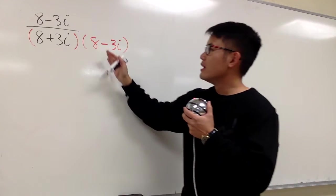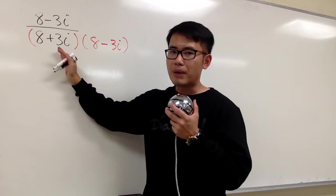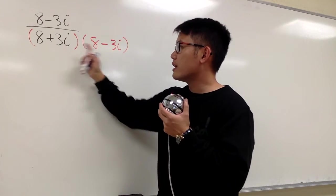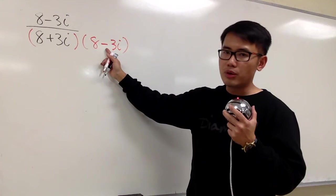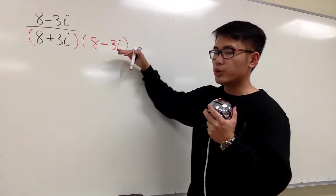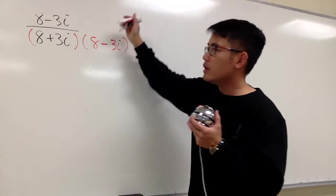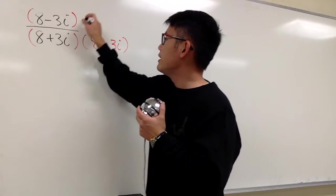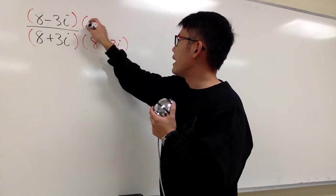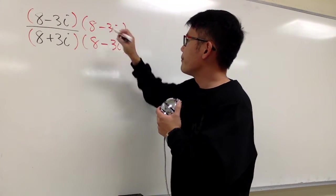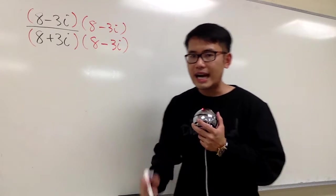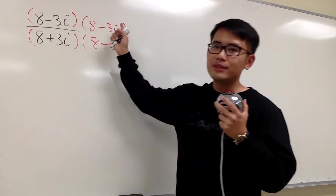With that being said, I'm just going to multiply the bottom by 8, and instead of the plus, we'll put down minus, and then this stays the same. 8 minus 3i. And once again, this is just the conjugate of the bottom. And of course, we do the same thing on the top as well. I'll put this down in the parentheses, and then I will also multiply the top by 8 minus 3i.